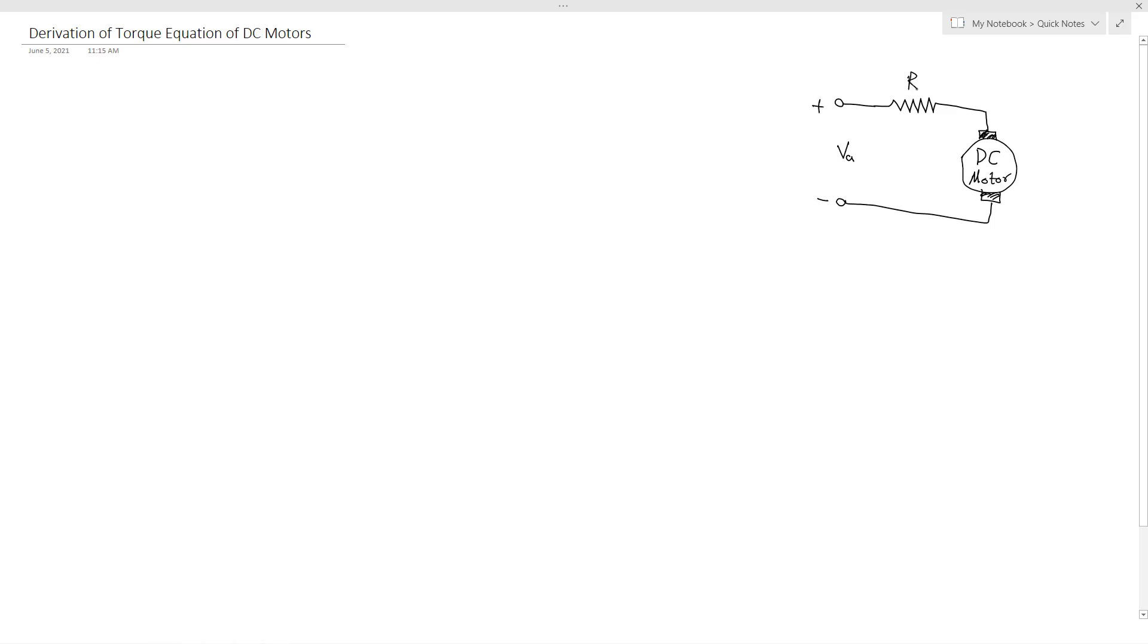So here we have VA, we have RA, and the current flowing through the winding is IA. And here we will get back EMF and we will call it EB.